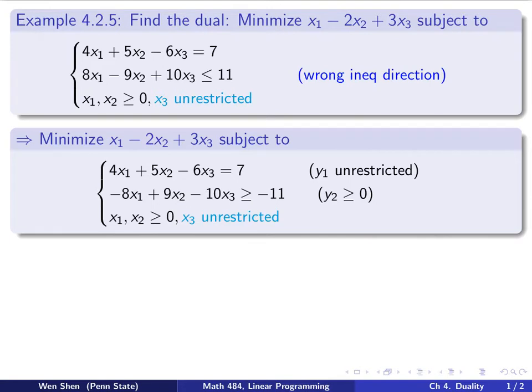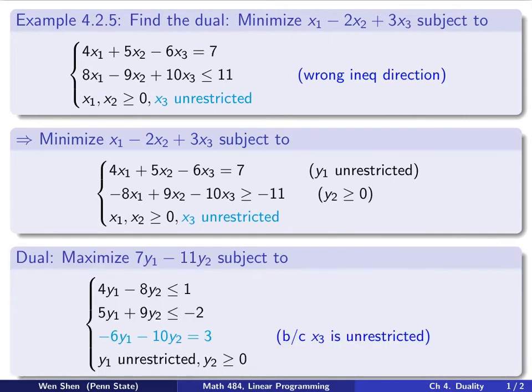Now, from this problem, we can simply follow that summary table we had and set up the dual. We have two constraints here, which means we will need two variables, y1 and y2, and each one corresponds to each constraint. Y1 corresponds to the first constraint, which is an equal sign, so it's an unrestricted variable. And y2 corresponds to the second one, which is restricted. Also pay attention that x3 is unrestricted. This is highlighted. It has consequences.